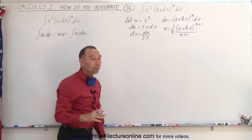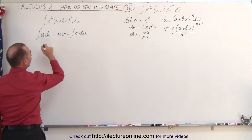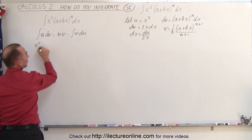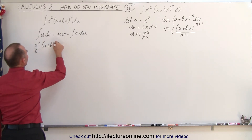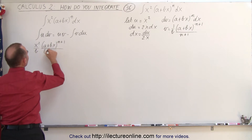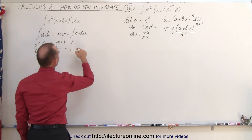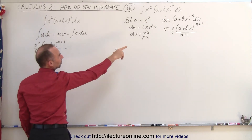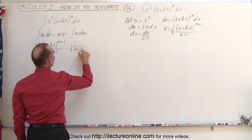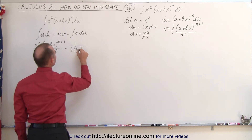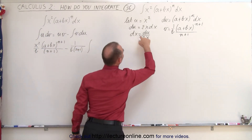Now we are ready to plug that in. So u times v: since u is x squared, we end up with x squared divided by b times a plus bx to the n plus 1 power divided by n plus 1 in the denominator. This is u times v, minus the integral of v du — so we have 1 over b times n plus 1 on the outside, and now we have the integral of what's remaining times du.